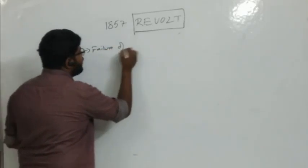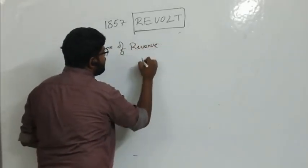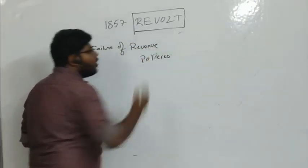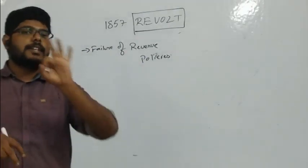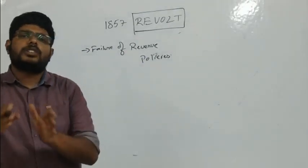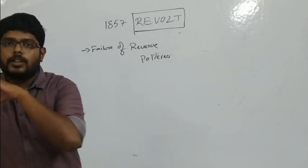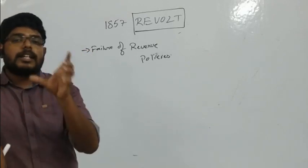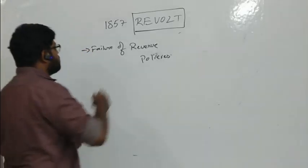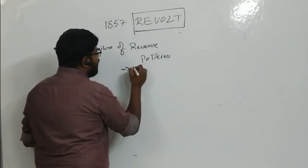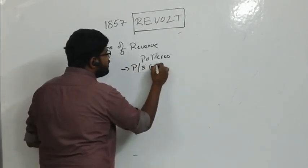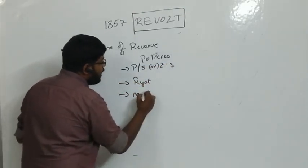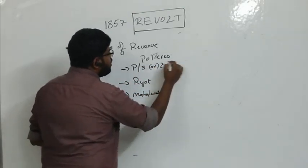The first reason is failure of revenue policies. In India, the company had three revenue policies, mainly focused on money-making without caring about local Indian kingdoms. The three systems were: permanent settlement system or zamindari system, ryotwari system, and mahalwari system.